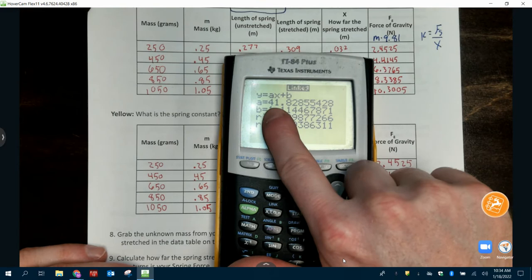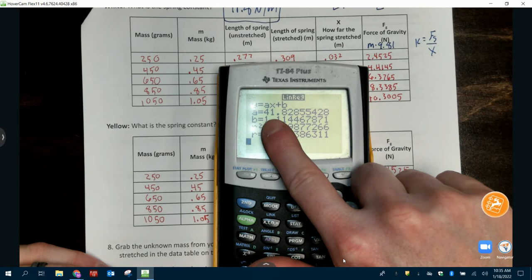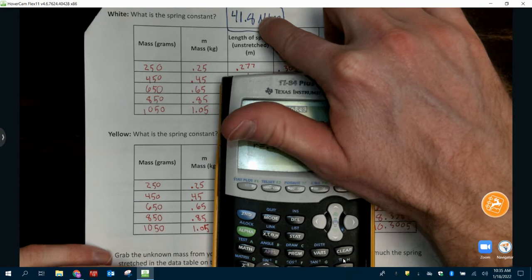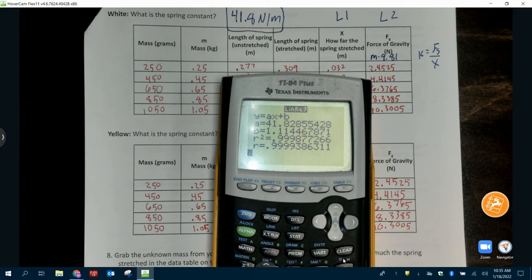I'm going to go through that like three more times so you can see that. This number right here for my white one was 41.8. That is the slope of your line. That's the number you're putting here for your spring constant. Okay. So you guys know what the numbers should come out to?